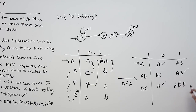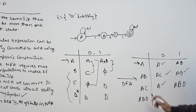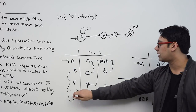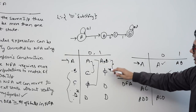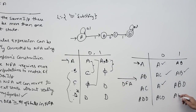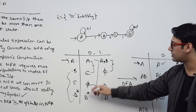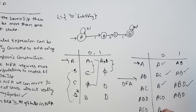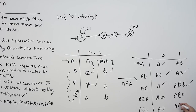We have not defined state ABD. For ABD, take the union of transitions from A, B, and D. On 0, we get ACD. On 1, we get ABD. We have not defined ACD. For ACD, take the union of transitions from A, C, and D. On 0, we get AD. On 1, we get ABD.